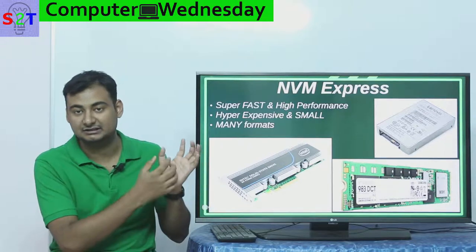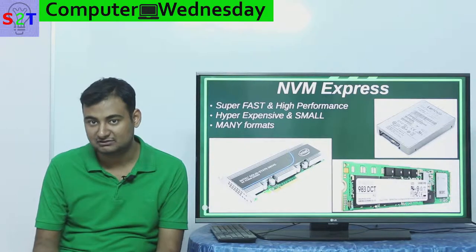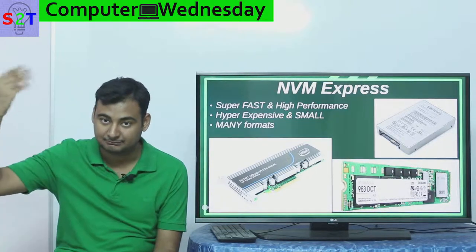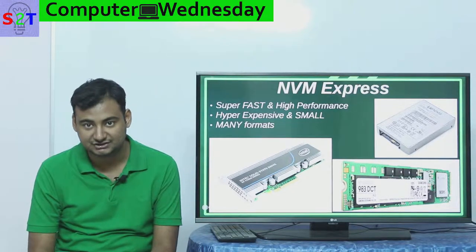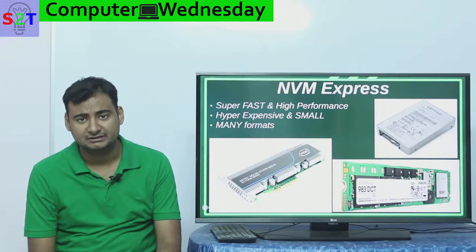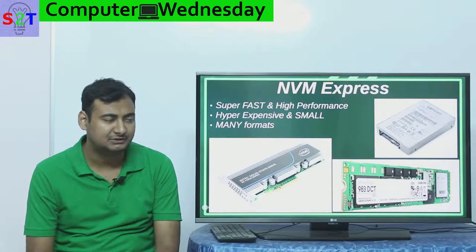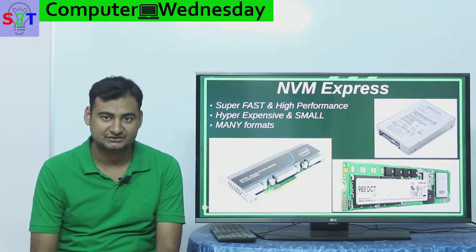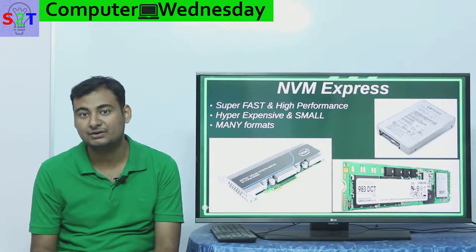Because NVMe didn't redesign the PCI Express standard, it benefits automatically as PCI Express generations improve. We're currently at PCIe 3.0, with 4.0 arriving and 5.0 on the horizon — NVMe will get faster without any physical changes. Right now you can buy a Samsung NVMe drive from Amazon with upwards of 1.5 GB/s write speed, so fast that a normal Blu-ray's worth of data would be written before you notice it.